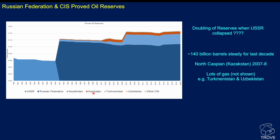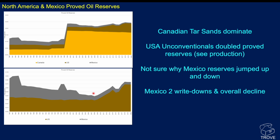For North America and Mexico, putting the three together, Canada in yellow dominates — that's the Athabasca and surrounding tar sands, booked as reserves around 1998, just dominating the picture. Overlaying on that is the USA in brown with Mexico on top. If we take out Canada and look at the USA alone, their reserves were declining away until around 2008.